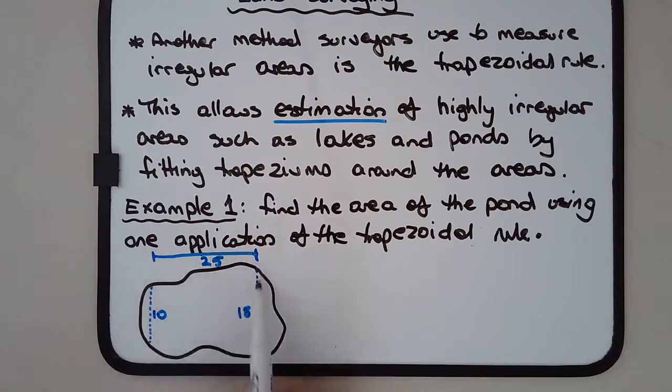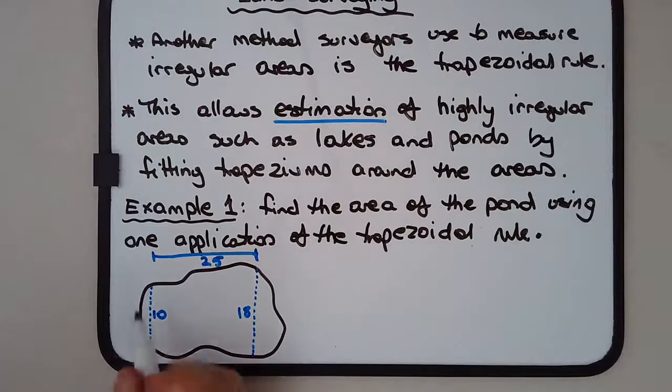25 meters away we have another measurement which is 18 meters. Now these two dotted lines are parallel to each other. That's important to note - they must be parallel to each other.